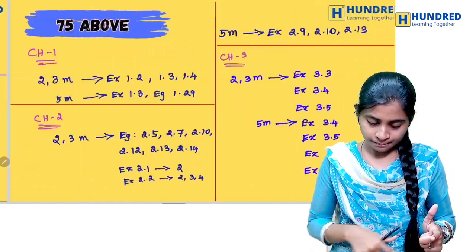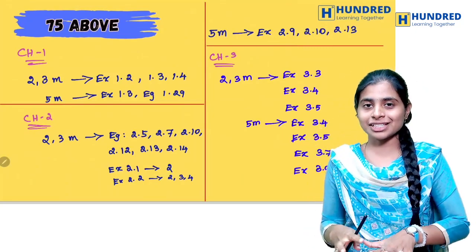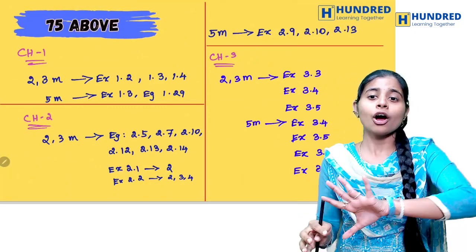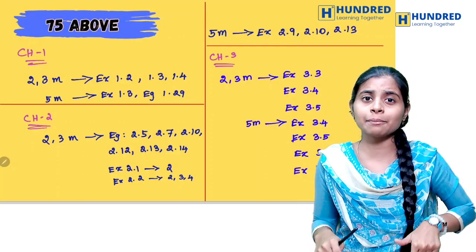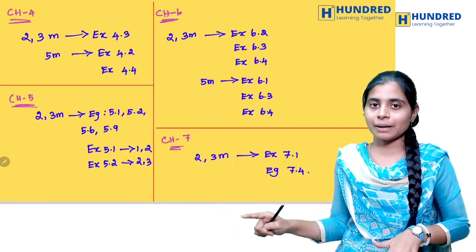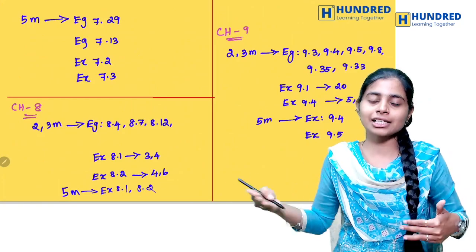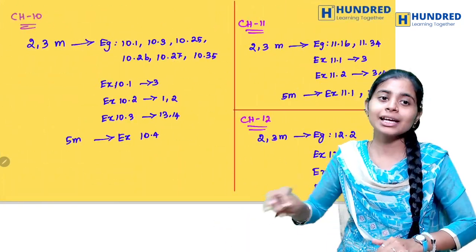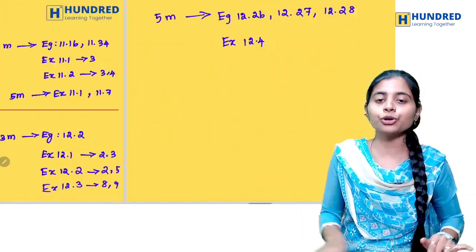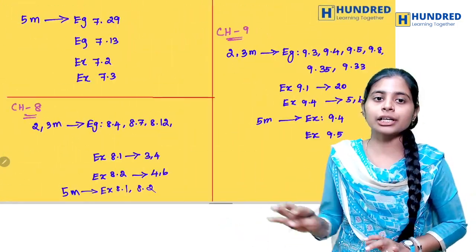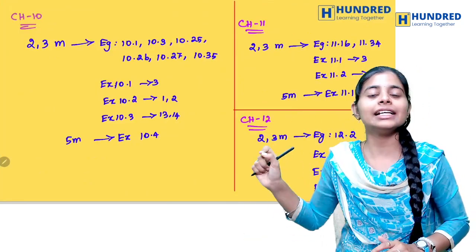Next is the 75 above category. For 75 above, you should answer all questions. You can see all the 5-mark questions, and these will be extra questions compared to the just pass plan. You can see all questions up to Chapter 12. Practice hand-written solutions — practice them now.